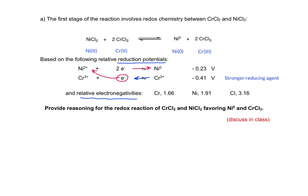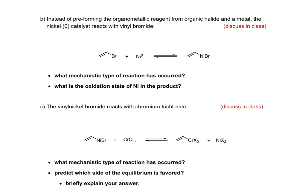Turning to the next page of the worksheet, the organic bromide now reacts with nickel zero to give an organonicel bromide intermediate. In class, we'll review what mechanistic type of reaction this is and the oxidation state of nickel in the product of this reaction.